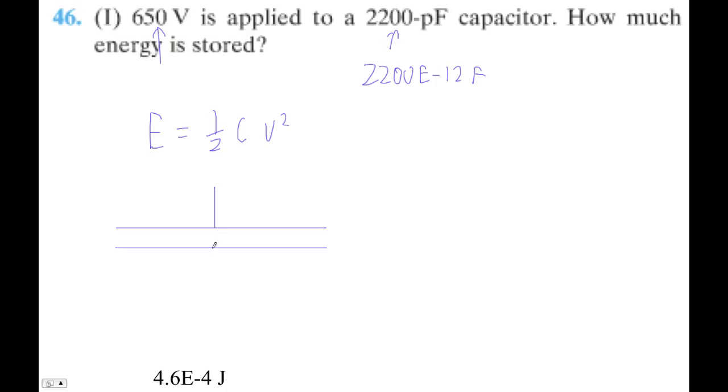If electric fields have energy in them, if you suddenly make the electric field go away, that is, we short out this capacitor, that energy has to go somewhere, and the answer is that a collapsing electric field generates a magnetic field.